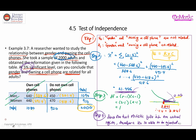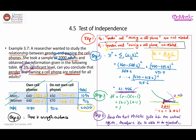Step five is the conclusion. Since the null hypothesis is rejected, there is enough evidence to conclude that gender and owning a cell phone are related. Thank you very much for watching.